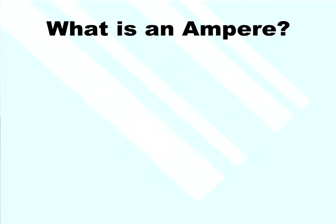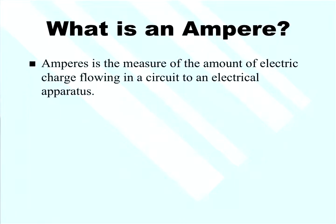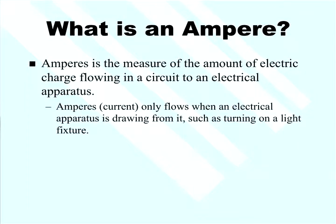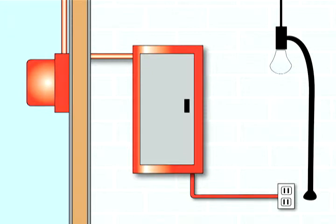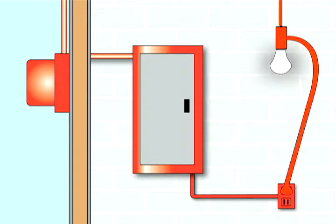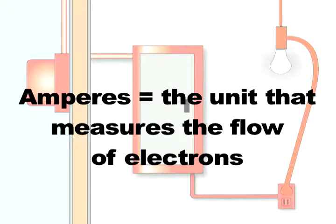Let's talk about amps. Amperes is the measure of the amount of electrical charge flowing in an electrical circuit to an electrical apparatus. Amperes, or current, only flows when an electrical apparatus is drawing from it, such as when turning on a light fixture. The utility company sends electrical energy or voltage to the house through the meter to the panel; the voltage, energy, or potential is waiting to be used. Once an appliance is plugged into the receptacle and turned on, the amperage — the unit measuring the flow of electrons — begins to flow.